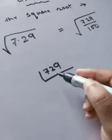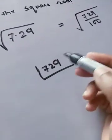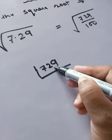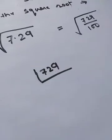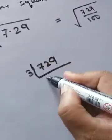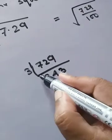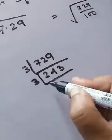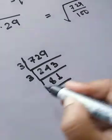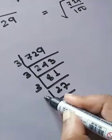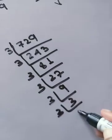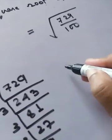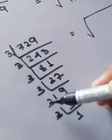Let's check if 729 is divisible by 3 by adding all digits: 7 + 2 + 9 = 18, and 18 is divisible by 3, so 729 is also divisible by 3. Dividing repeatedly by 3: 729 → 243 → 81 → 27 → 9 → 3 → 1. There are six 3s in the factorization of 729.